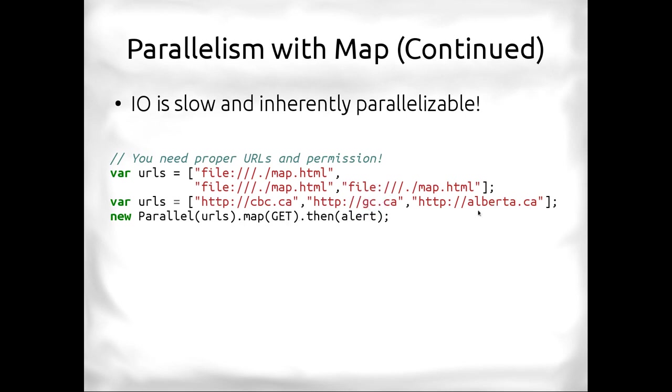Instead of waiting six seconds, we can do this parallel with the URL. We can map it. We can give it the get function we wrote. Then we can get the result, which will be an array of three webpages. But it went out and it got those webpages and it only took two seconds instead of six seconds. It's good for I.O., especially stuff that's to different devices or different machines.